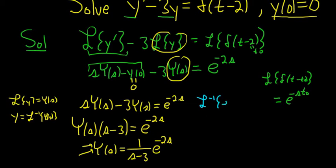So the inverse Laplace of e to the negative As big F of s, where big F of s is the Laplace of little f, this is equal to f of t minus a times the unit step of t minus a.